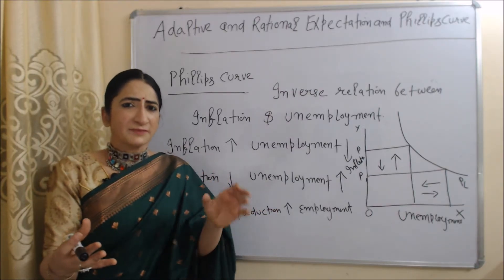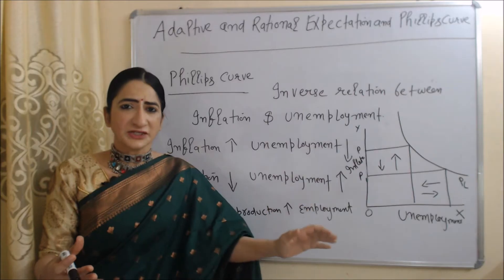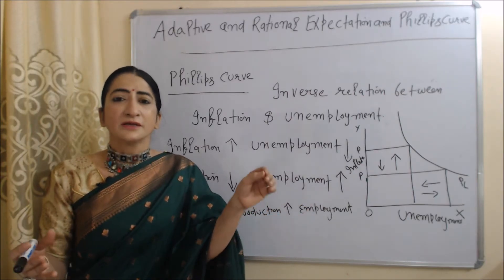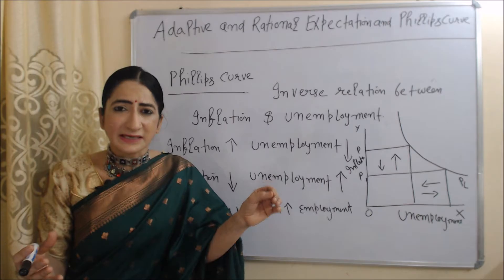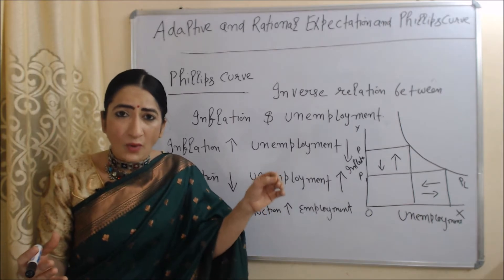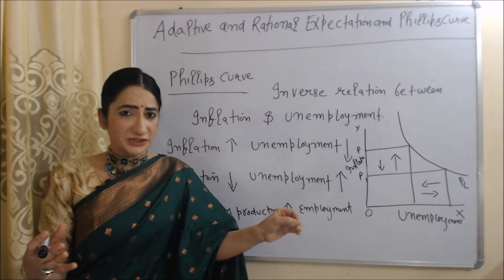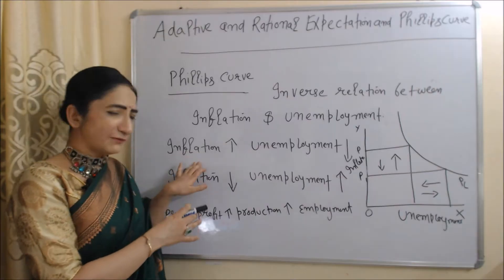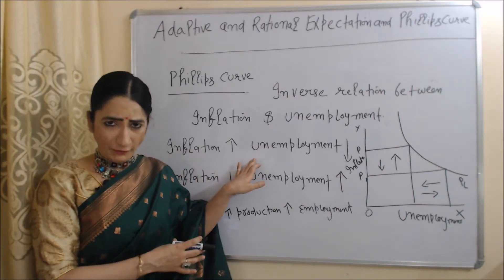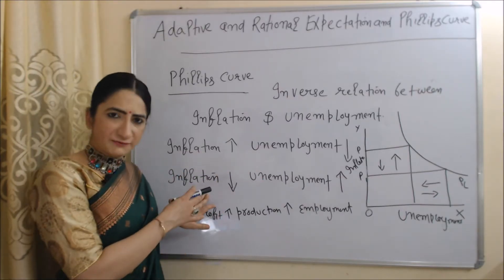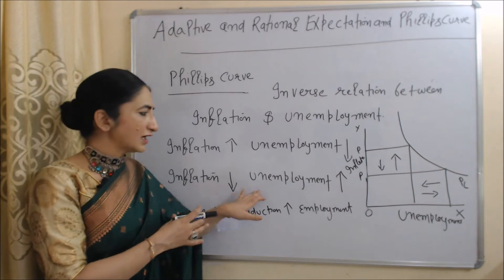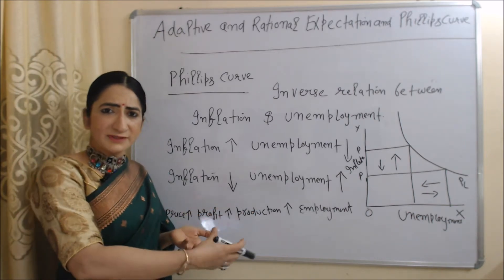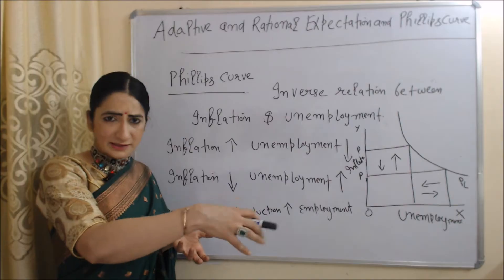The normal Phillips curve describes an inverse relation between inflation and unemployment. According to this, if inflation increases, unemployment falls. On the other hand, when inflation falls, unemployment increases.